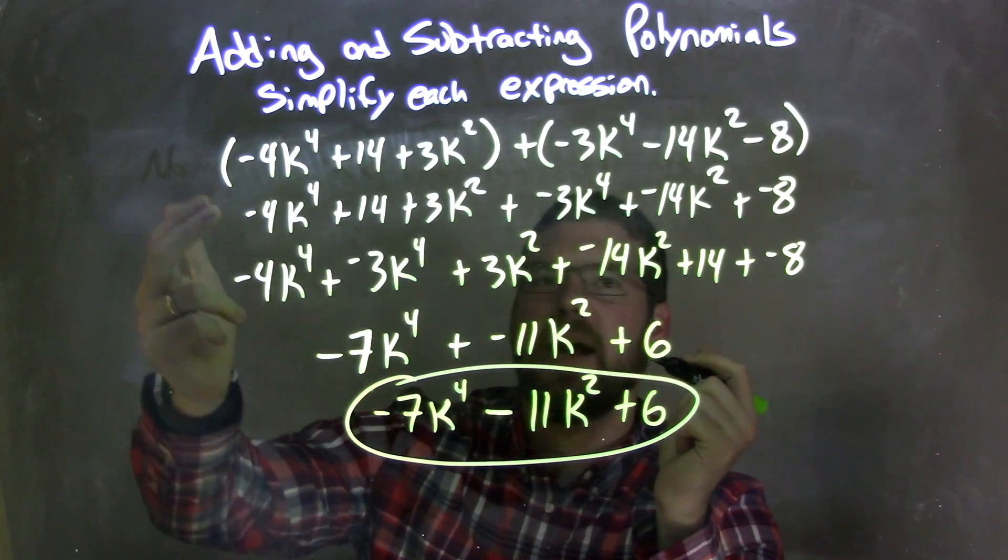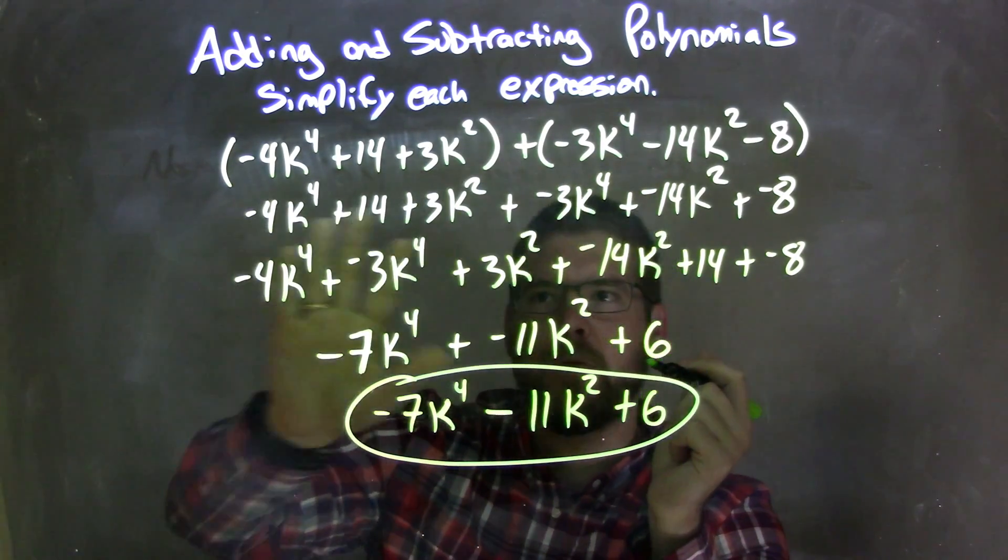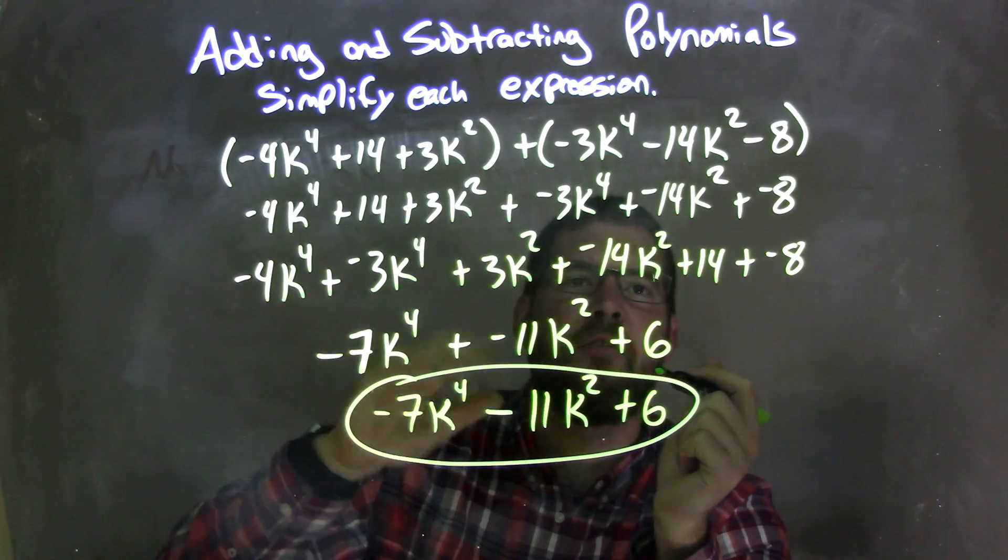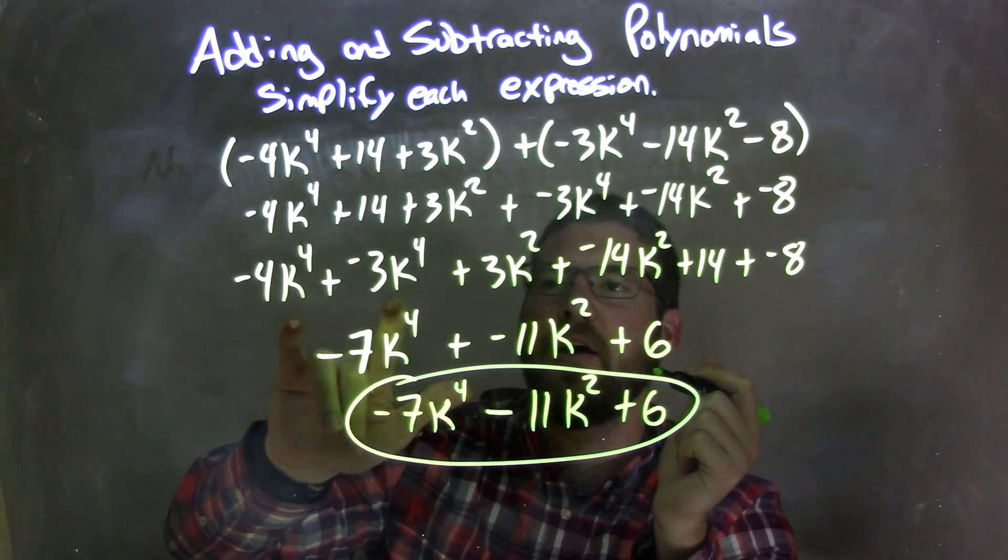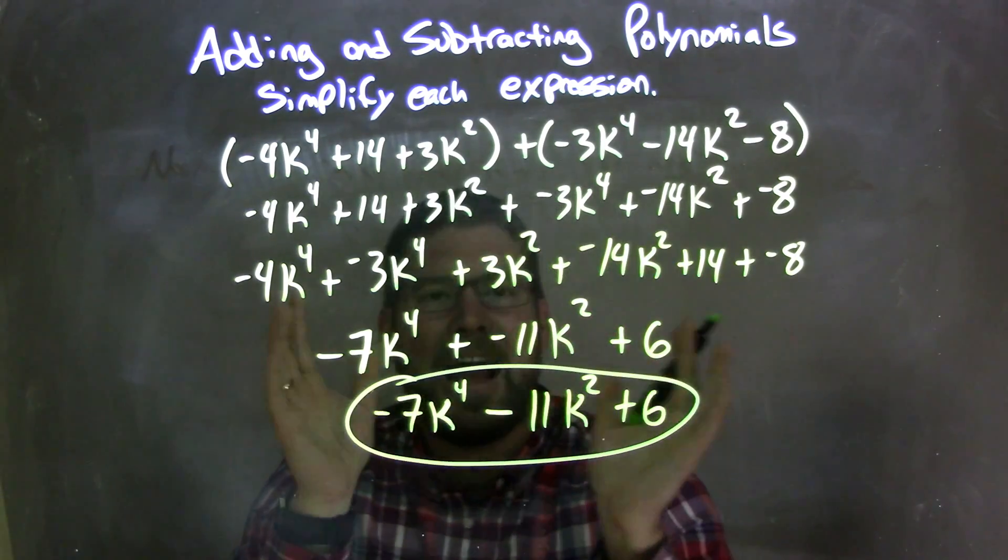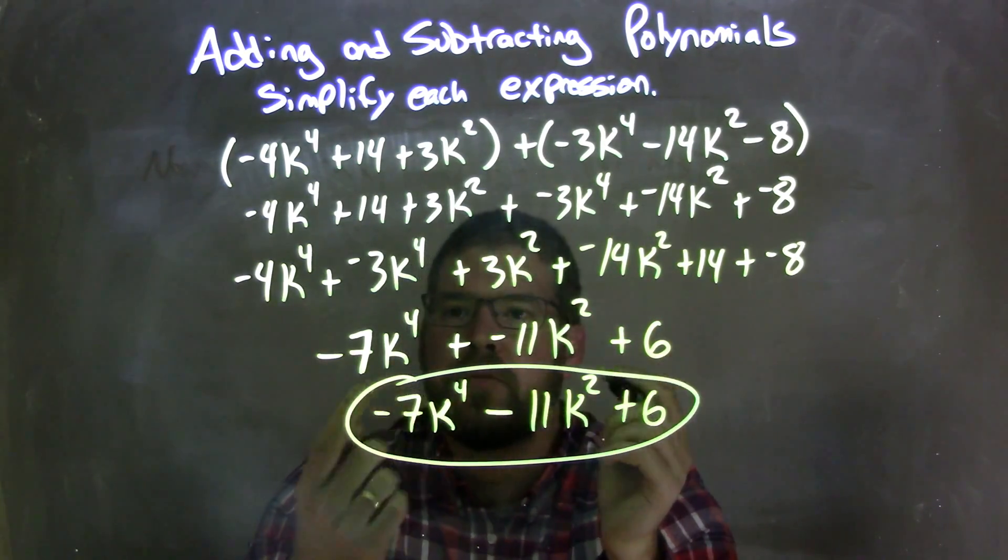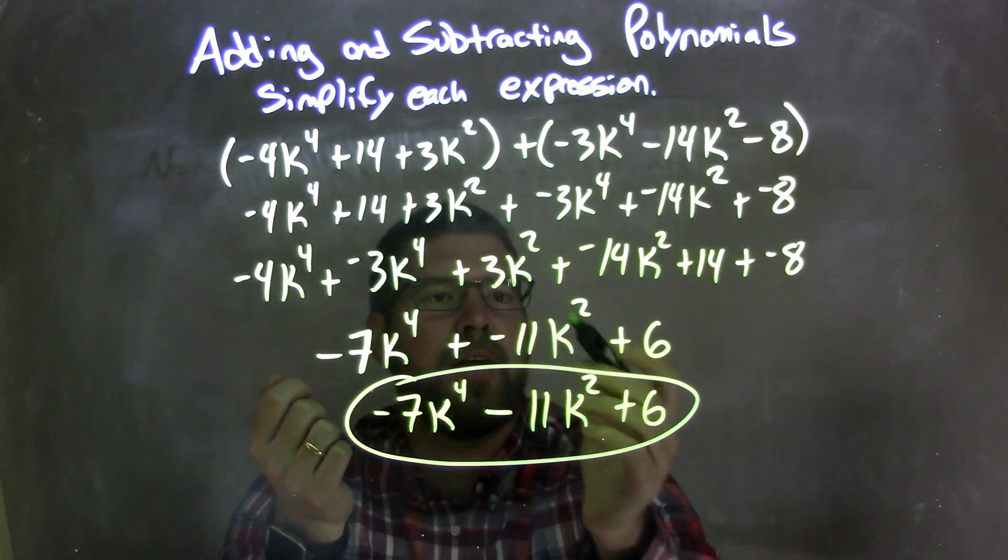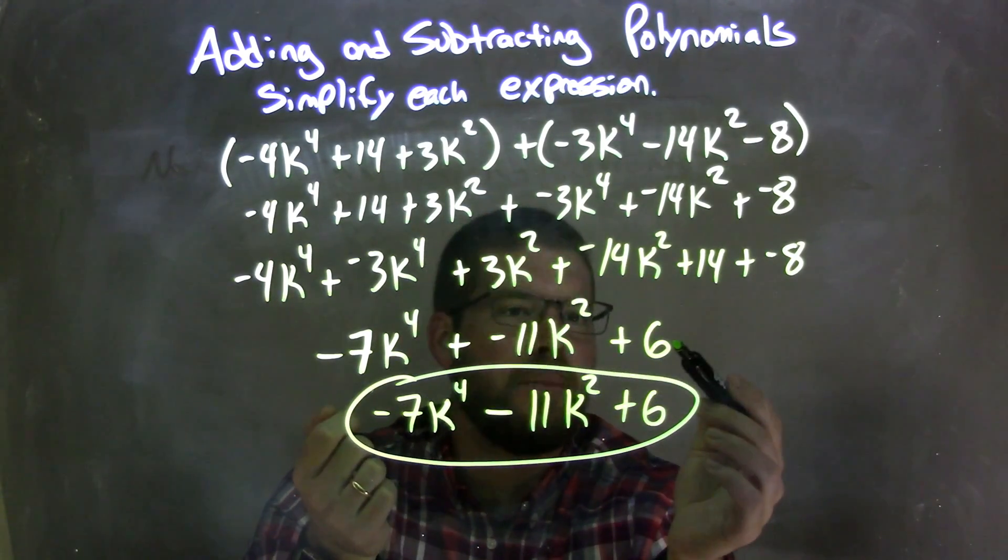I then rearranged, and double checked that I brought everything down, but rearranged it, using the commutative property, having my highest degrees first. So, here are my k to the 4th powers, then here is k to the 2nd powers, and then here's our constants. And then, once I rearranged them, I combined my like terms, giving me negative 7k to the 4th, negative 11k squared, and then a plus 6.